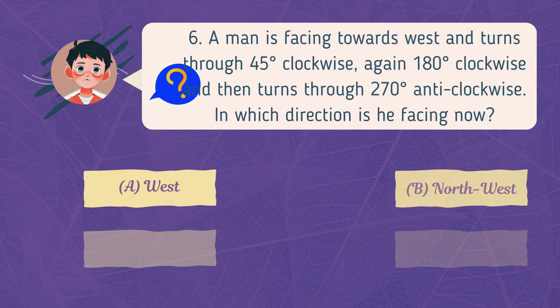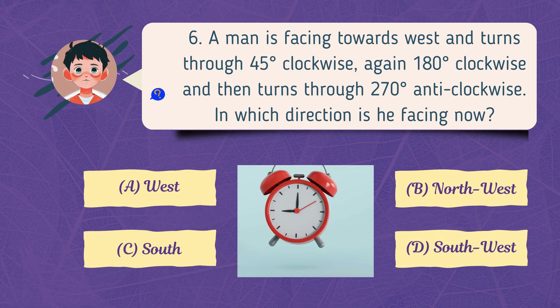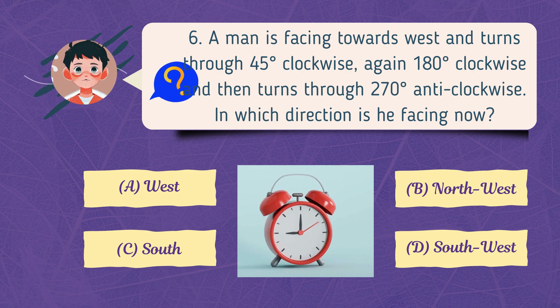A man is facing towards west and turns through 45 degrees clockwise, again 180 degrees clockwise, and then turns through 270 degrees anticlockwise. In which direction is he facing now?